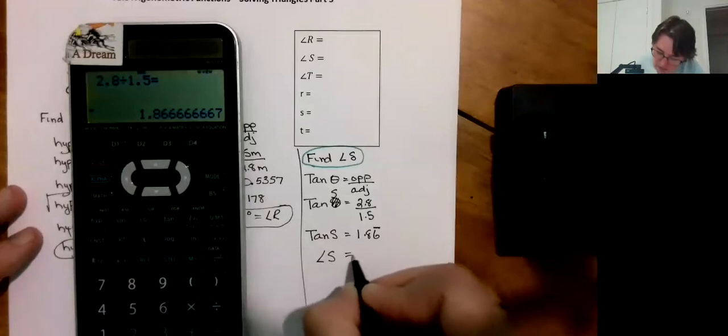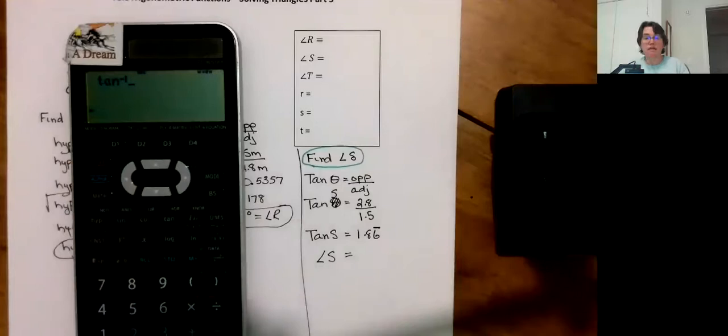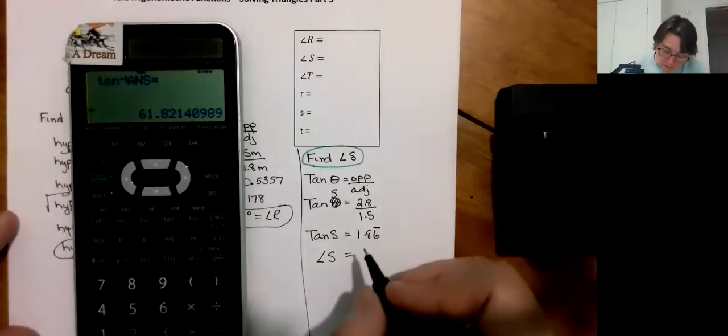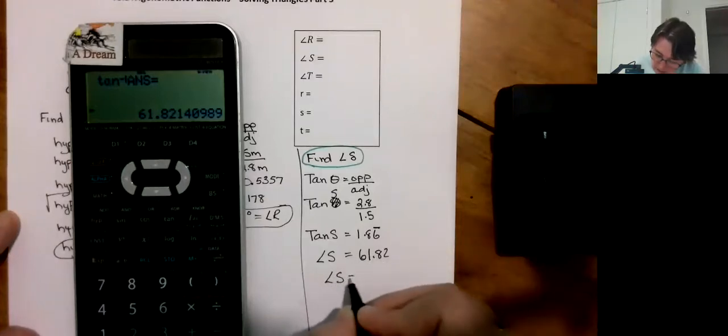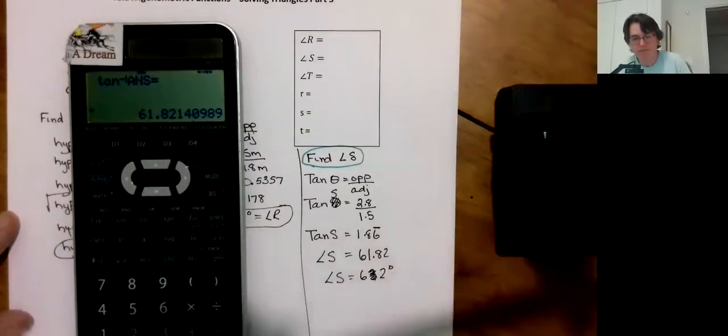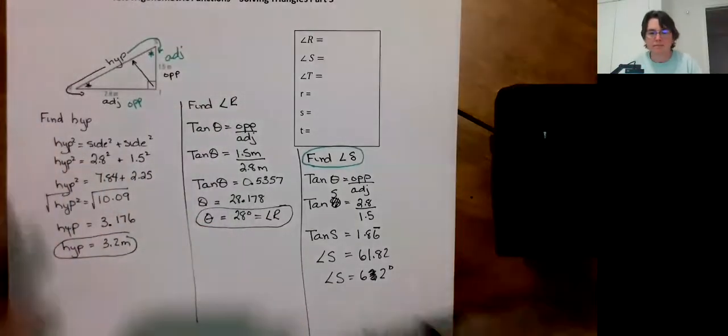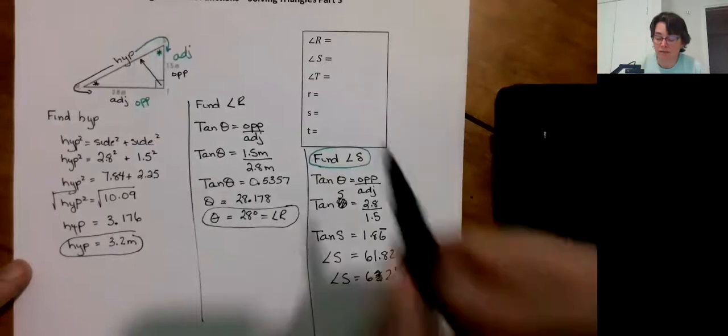So angle S, and I'm going to do that second tangent. And like I said on my calculator, I don't have to retype it. Boom. 61.82. Or angle S is equal to 62 degrees.